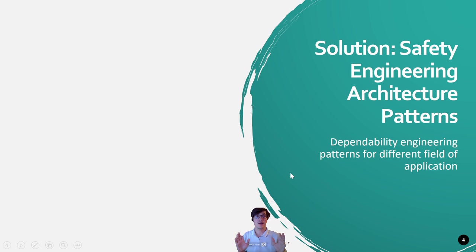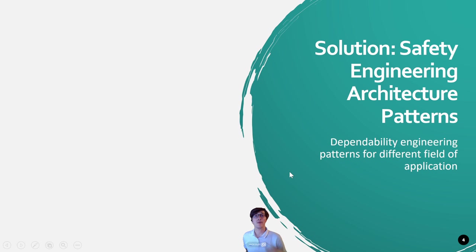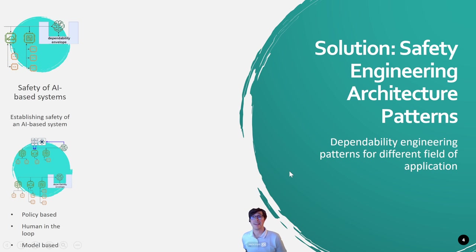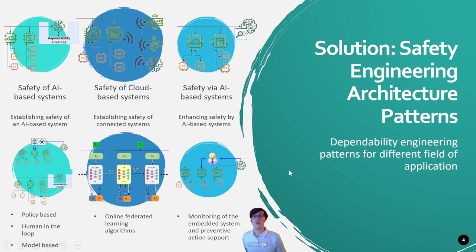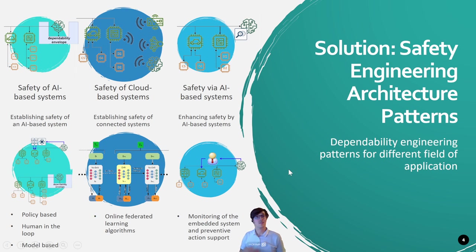We have two groups of solutions. The first group is related to safety engineering architectural patterns — best practices that you can use if you want to make use of an AI-based system or a cloud-based system in a safe manner. But also the contrary: how AI-based systems can help you enhance the safety of your overall system.